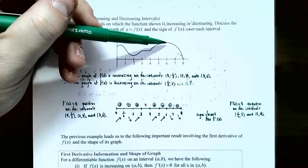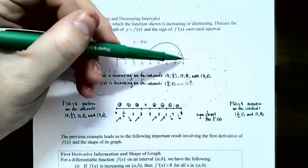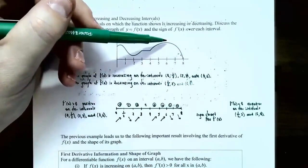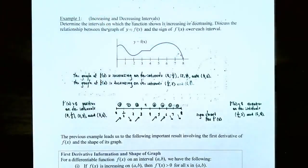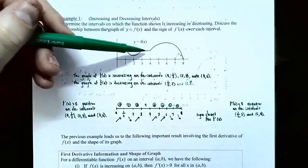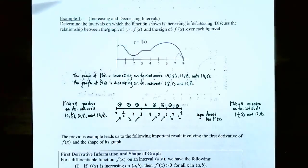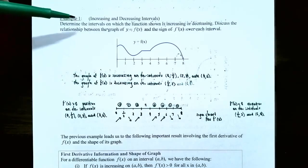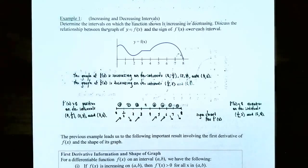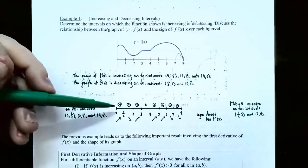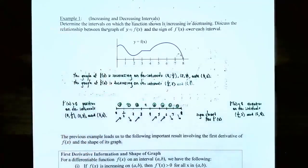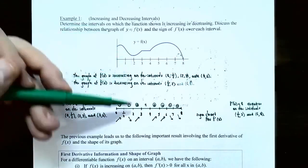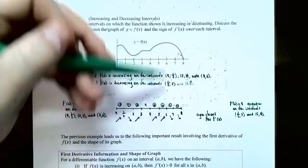The graph is also constant between x = 3 and x = 4 — it doesn't rise or fall. Now let's discuss the relationship between the graph and the sign of the derivative. We'll make a sign chart with the x-axis from 0 to 8, labeling the key points: x = 1/2, 2, 3, 4, 6.